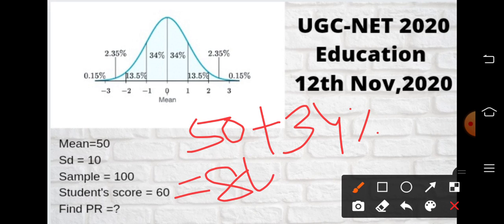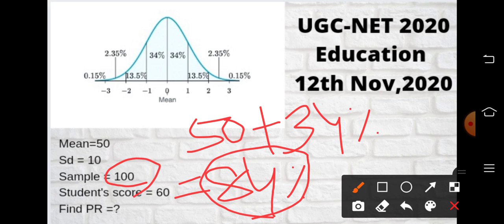Automatically, as the sample is 100, you need not calculate further. Since the total percentage of cases is 100 percent, the score is 84 percent. That means the percentile rank will be 84. If the option 84 was there, the correct answer will be 84.